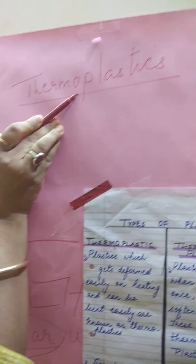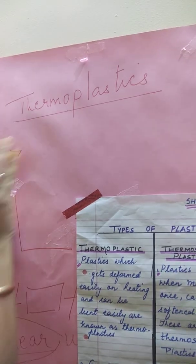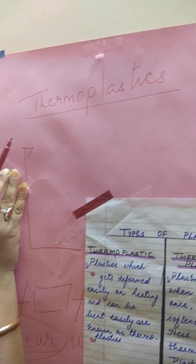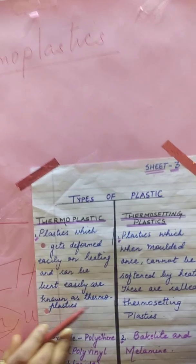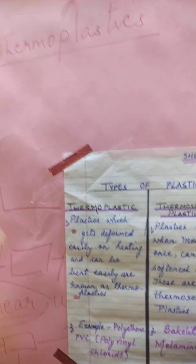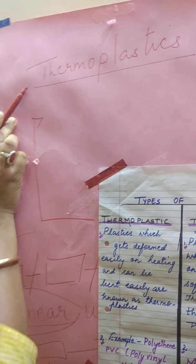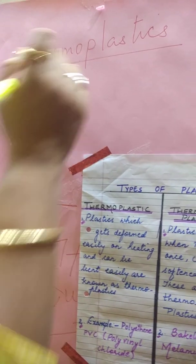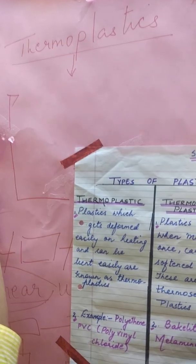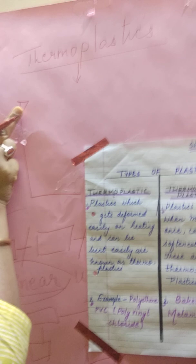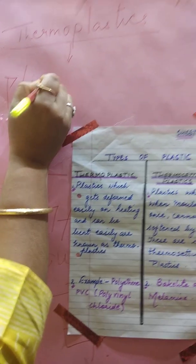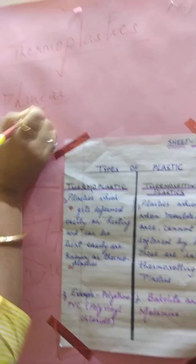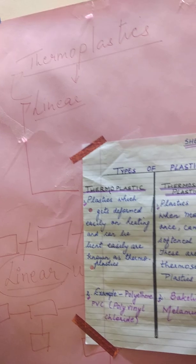Plastics which can get deformed easily — you can easily give any shape on heating and can be bent easily — are known as thermoplastic. You can deform, you can bend, you can give a shape easily. So children, the type of arrangement you can see in thermoplastic is linear arrangement. The word 'easy' is linked with thermoplastic. An example is polythene.